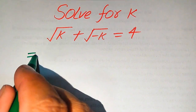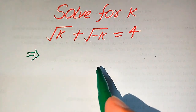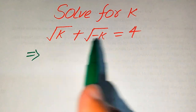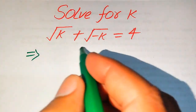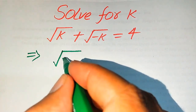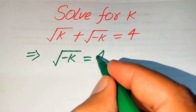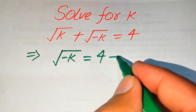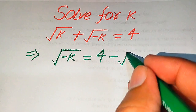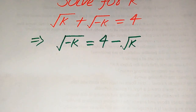First we need to remove the square root sign from the terms. We move square root of k to the right hand side, so we write this as: square root of minus k equals 4 minus square root of k.